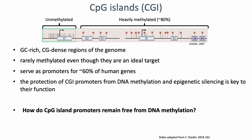CpG islands are regions near promoters that are rich in CpG dinucleotides — more specifically, near promoters of somewhere between 40 to 60% of the genes in the human genome, and their methylation status is strongly associated with repression of gene expression. It's worth noting that CpG dinucleotide methylation doesn't just happen in CpG islands; there can be CpG methylation within gene bodies. In fact, CpG dinucleotide methylation in gene bodies tends to be associated with activity of gene expression, so CpG methylation doesn't always associate with repression.